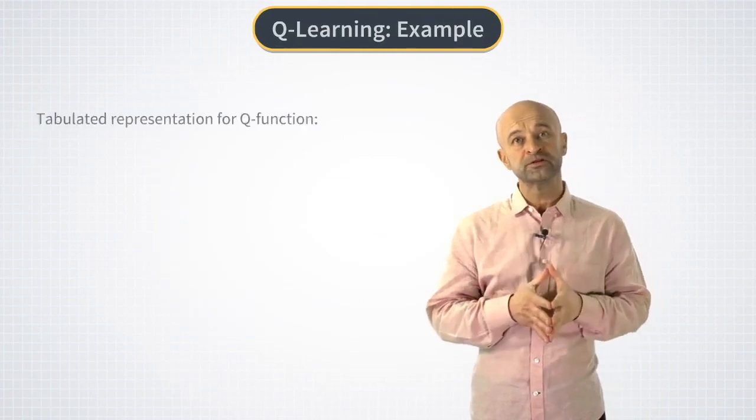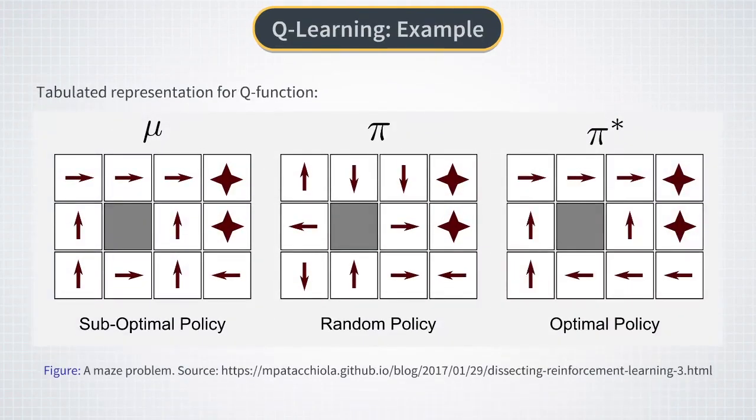One such example could be an application of Q-learning to solve a maze problem. Here you can see an example of a simple maze with an obstacle shown here as a black square and an exit in the top right corner. The problem of an agent is to learn an optimal policy that would prescribe the direction of the move given the cell location of the agent.